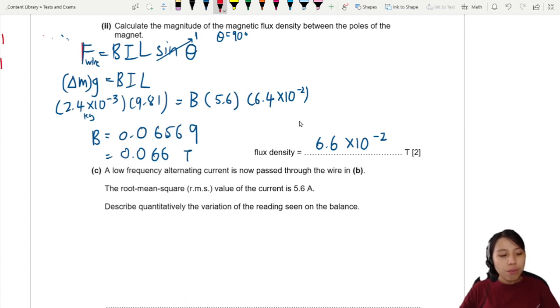So, this is a 2 mark question. First mark comes from you, showing that you know the force on conductor equation. BIL sine theta. Sometimes, if there's more marks, they may also give for substitution of correct values. But anyway, if you get the final value correct, 0.066, that's your accuracy mark.